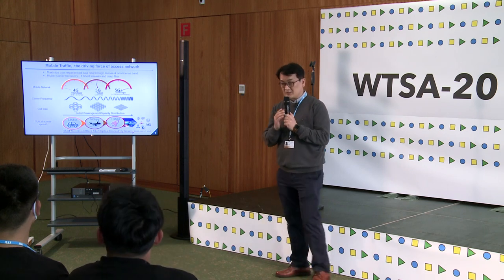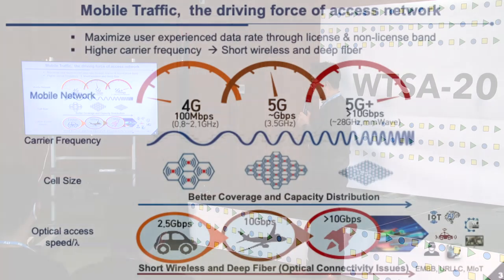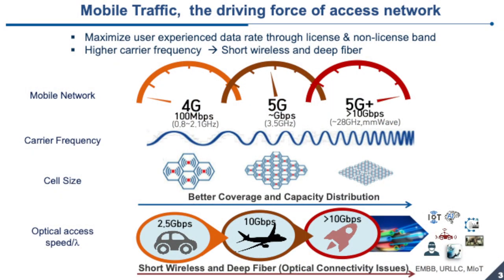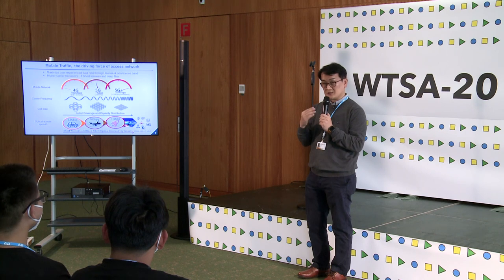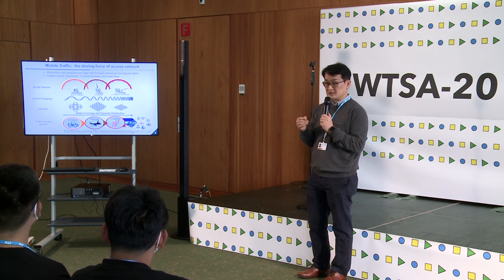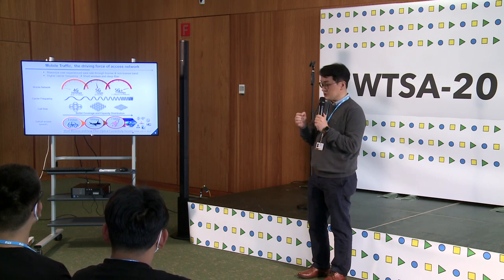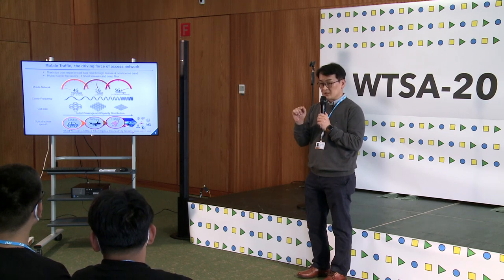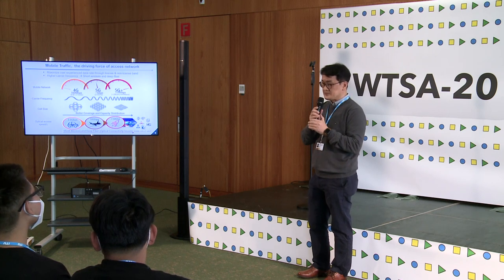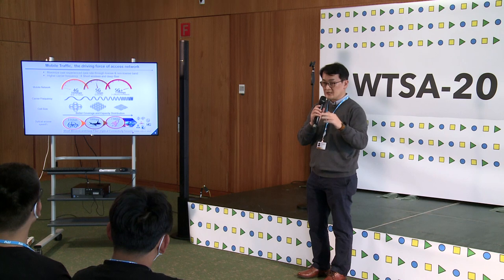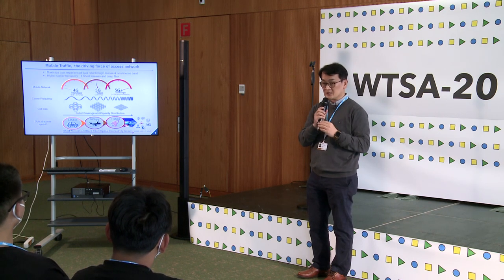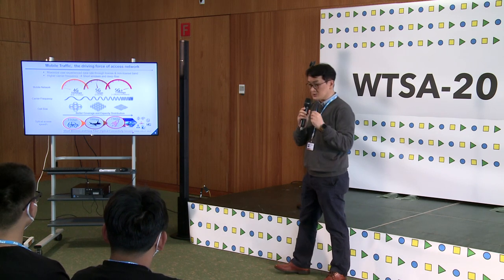Mobile traffic is the main driving force in current network technology. As the mobile network evolves from 4G to 5G, 5G Advanced, and beyond, we need very high carrier frequencies. For example, in South Korea, 5G utilizes around 3 GHz as well as 28 GHz. At these very high millimeter-wave frequencies, the signal does not propagate over long distances. So the wireless path becomes short, and optical fiber must be extended to end users, requiring many optical connections for each access point or mobile base station.